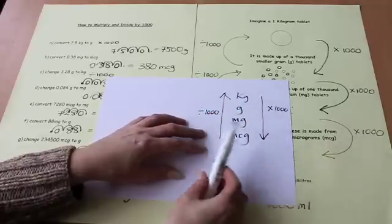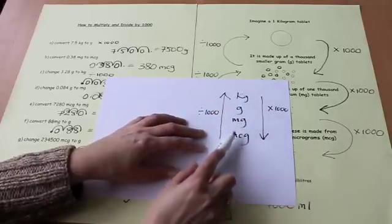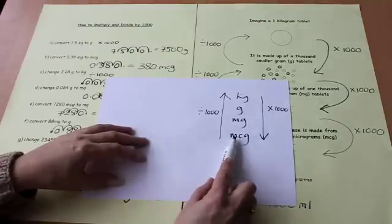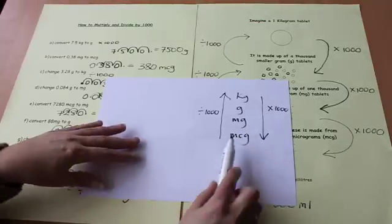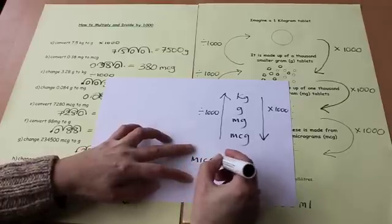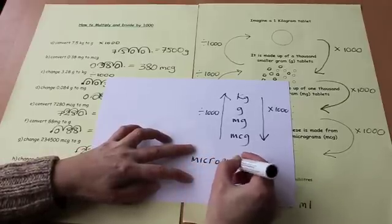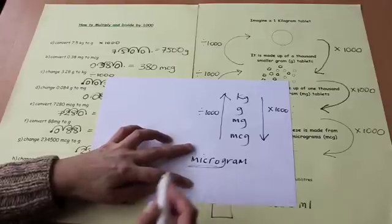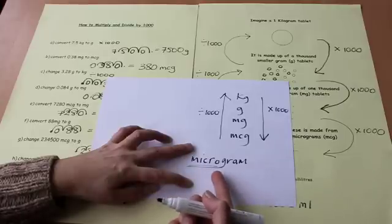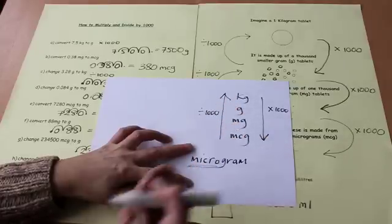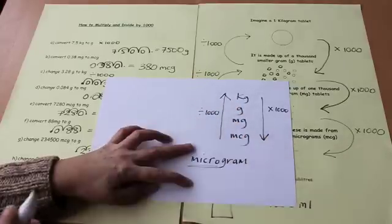I've seen students have difficulty remembering which one of these two is the largest. And sometimes I find it's worth looking at the word. For instance, here, microgram. Well, this part of the word, micro, reminds me of microscopes. And microscopes are used to look at very small things. So this would remind me that the micrograms are the smallest in this series of sizes.